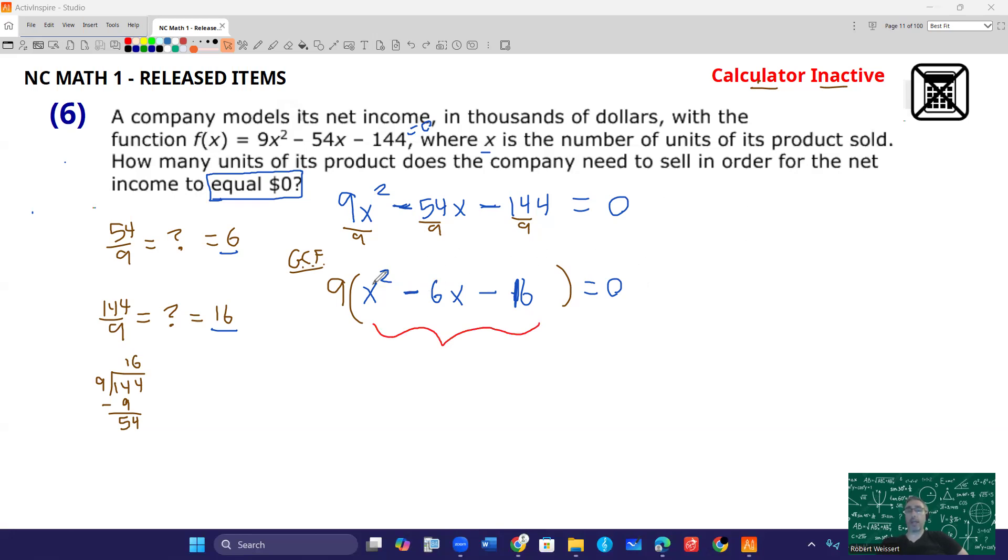You can do this as an AC method, but honestly, with this one, I look at my C value. I look at that negative 16 and I try to think, can I come up with some numbers such that they multiply to negative 16, but they add to negative 6. That's your B value. So they have to multiply to the C value and add to the B value.